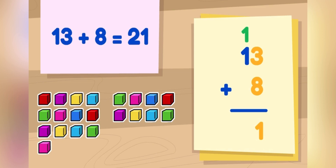Now we add that number with the 10's place from the other numbers. 1 plus 1 equals 2. 13 plus 8 equals 21. That's the same number as when we added with blocks.